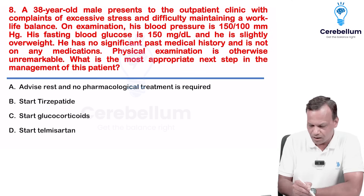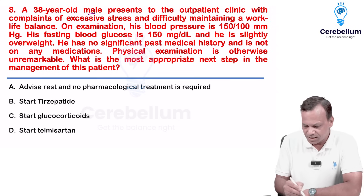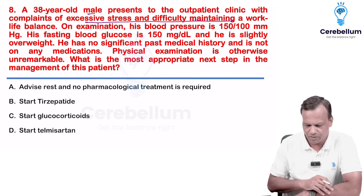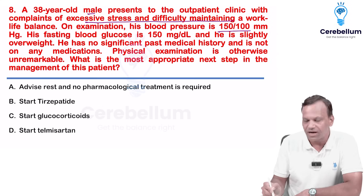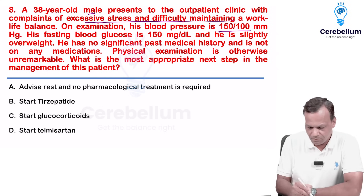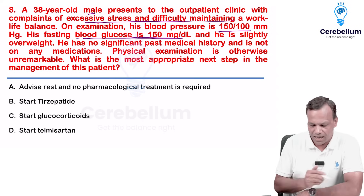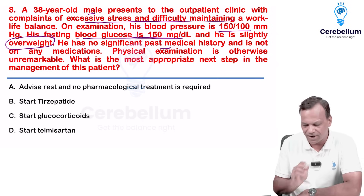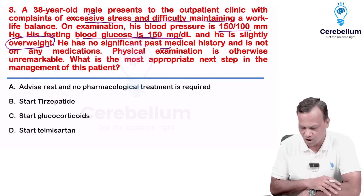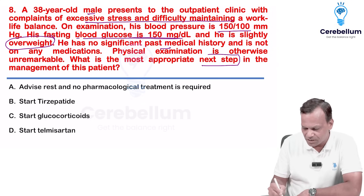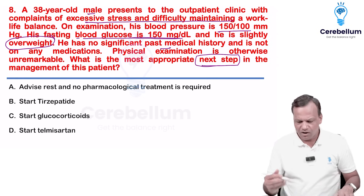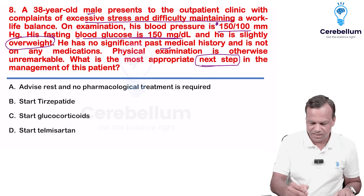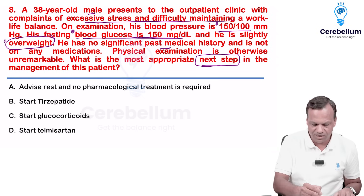A male patient presents with stress and difficulty maintaining work-life balance. BP is 150/100 — hypertensive. Fasting sugar is also high and he is overweight. No medical history, no current medication, physical examination is normal. There are three problems: hypertension, hyperglycemia, and overweight.